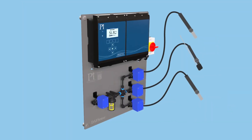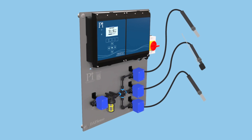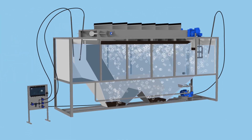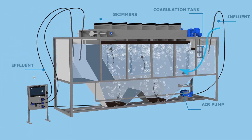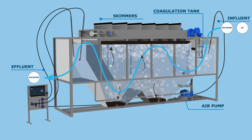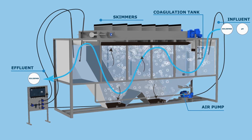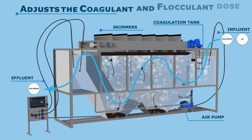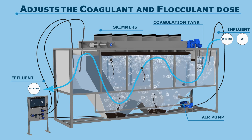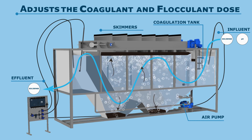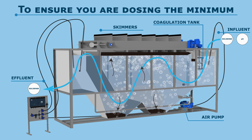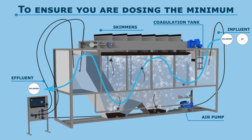DAF Sense ensures that your effluent solids and pH are inside your effluent limits without wasting money by overdosing. By measuring the incoming solids and the effluent solids while making adjustments for changing flow, the DAF Sense adjusts the coagulant and flocculant dose automatically to ensure you are dosing the minimum to achieve compliance.